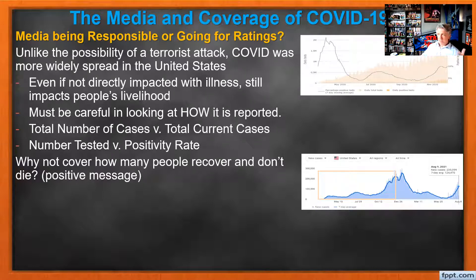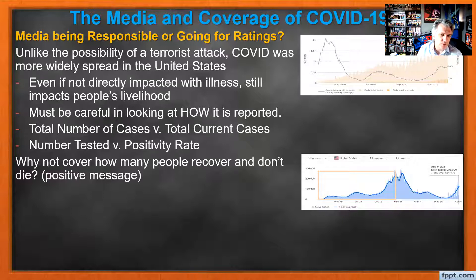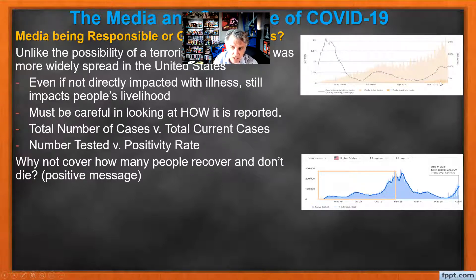And I know some of you are thinking, 'well, because COVID.' Let's take a look at COVID. Is the media being responsible or is it going for ratings? The answer is actually both. Unlike the possibility of a terrorist attack, COVID was more widely spread in the United States. Even if not directly impacted by the illness, it still impacts livelihood and people around you. But we've got to be careful with how it's being reported — is it the total number of cases or current cases? Are we talking about the number of people tested or the positivity rate? These two charts showing different things can look totally different.